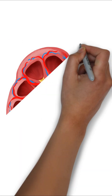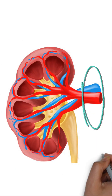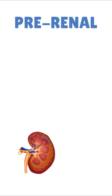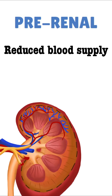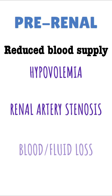The causes of acute kidney failure can be divided into pre-renal, renal, or post-renal. Pre-renal failure occurs in any condition where the blood supply to the kidneys is reduced, such as in hypovolemia, renal artery stenosis, and blood or fluid loss.